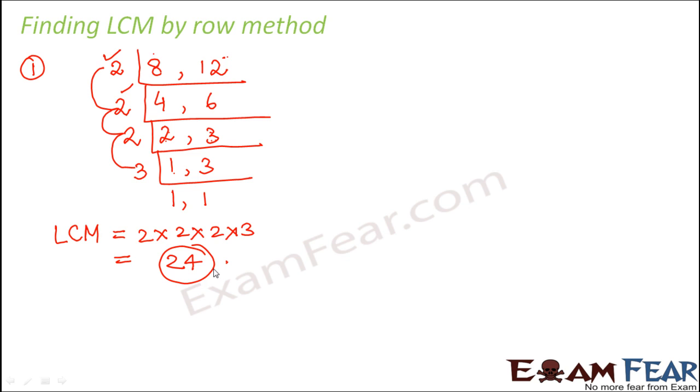So this is pretty simple, right? So this is how we find LCM by row method. So let us do it for a few more examples.